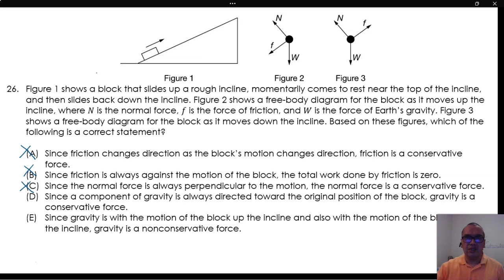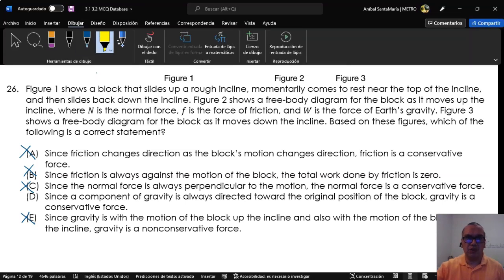E: Since gravity is with the motion of the block up the incline and also with the motion of the block down the incline, gravity is a non-conservative force. This is not even true. Gravity is against the motion on the way up. The correct answer then is option D.